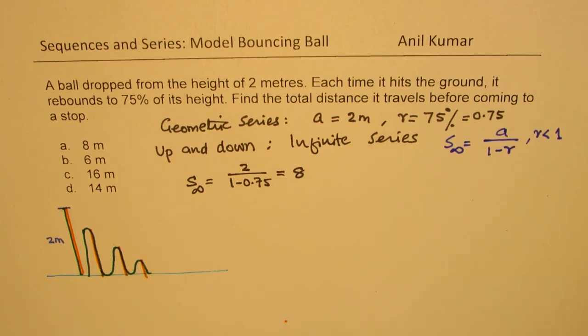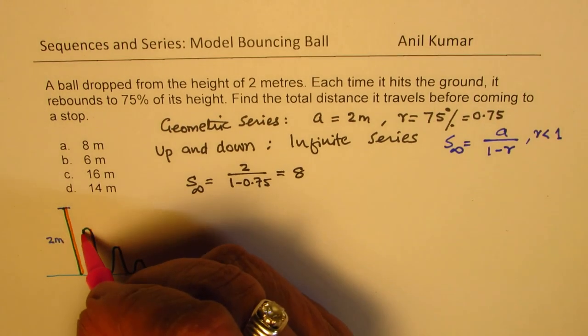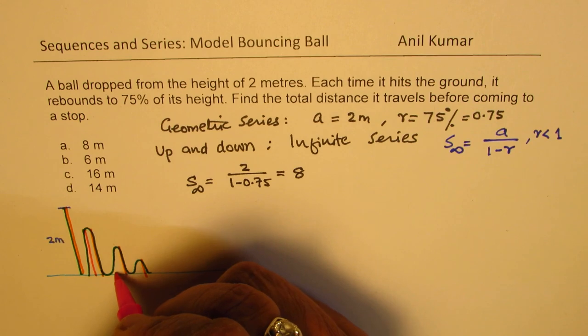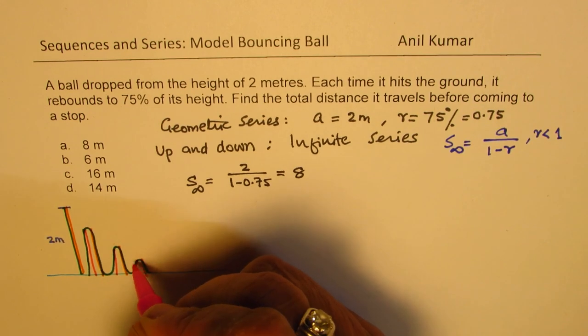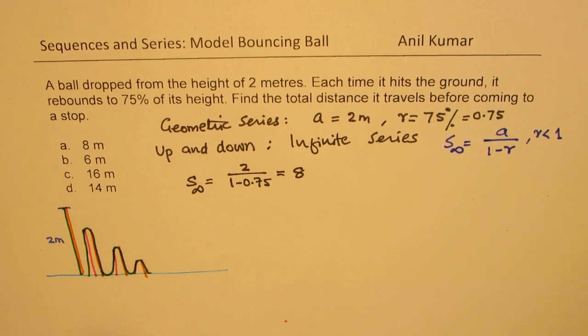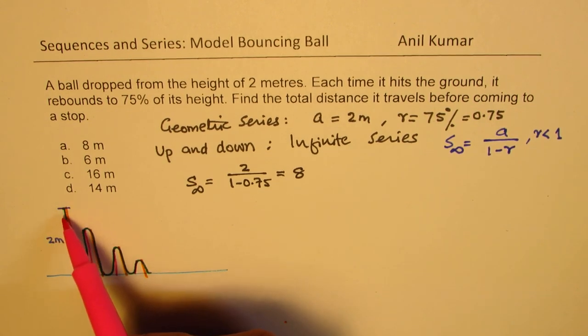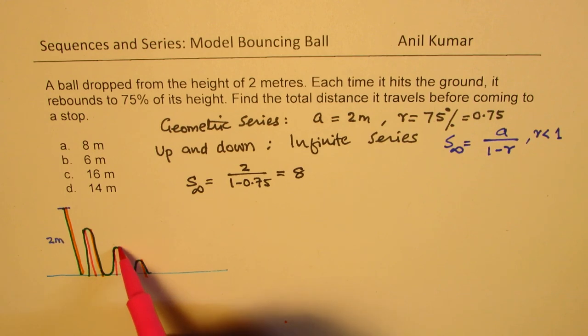So how much is the total distance? Well the total distance is that it is also bouncing back. So we have to add those distances which are going upwards also. Do you see that part? So total distance has to be taken.